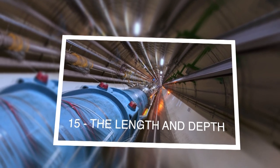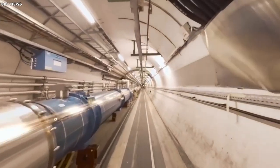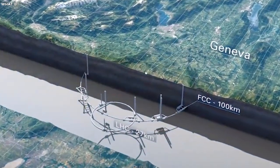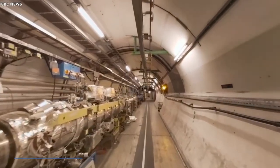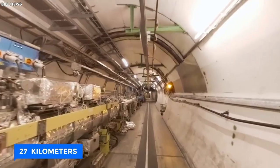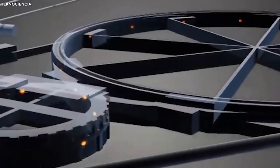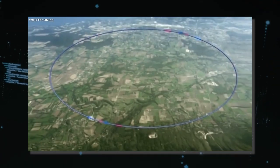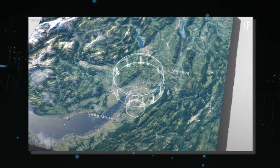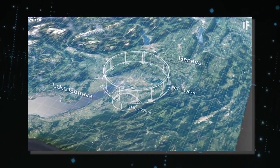The Length and Depth. The Large Hadron Collider, resting beneath the Earth's surface, spans a remarkable 27 kilometers in a circular path connecting Geneva and the Jura Mountains. As the tunnel was carved out, the two ends converged with astounding precision, coming together with a mere one centimeter gap.